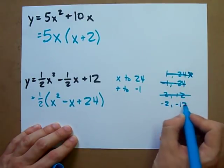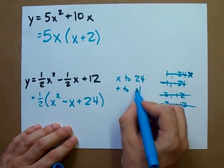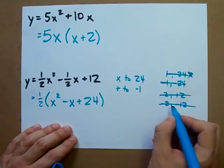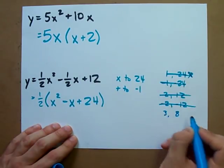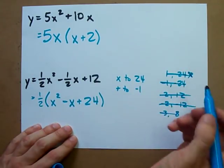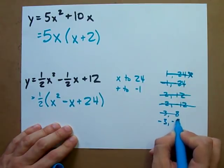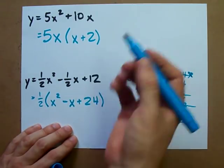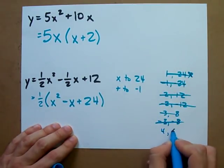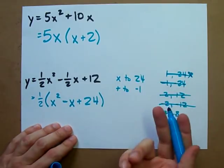Negative 2 and negative 12, those don't add to negative 1 either. What about 3 and 8? Don't add to negative 1. Negative 3 and negative 8, don't add to negative 1. 4 and 6 multiply to 24? Doesn't add to negative 1.